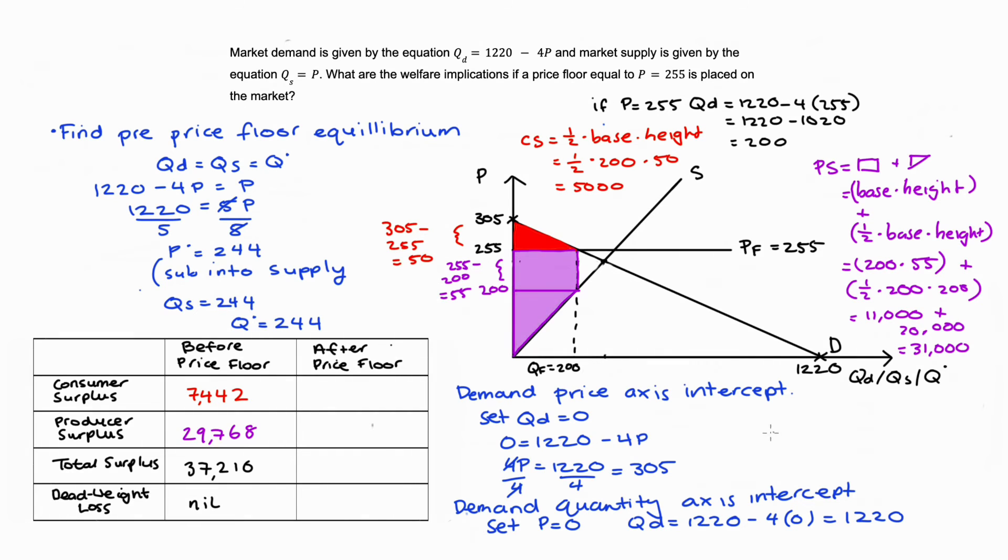Our total surplus is consumer surplus plus producer surplus, so 5,000 + 31,000 = 36,000 in total. Let's put all that in our table.